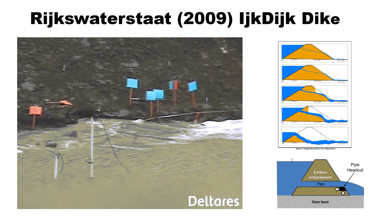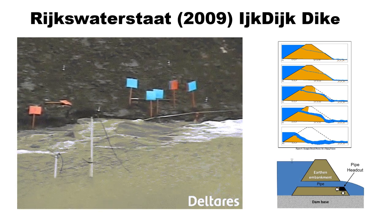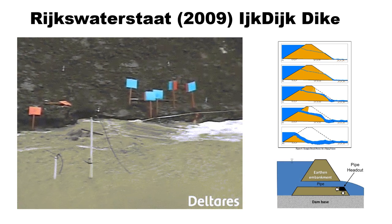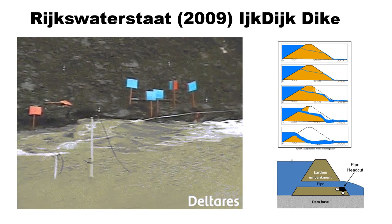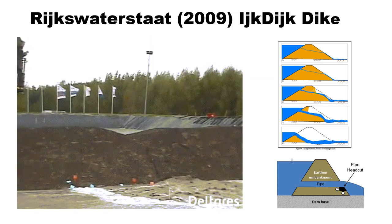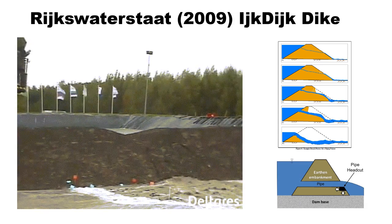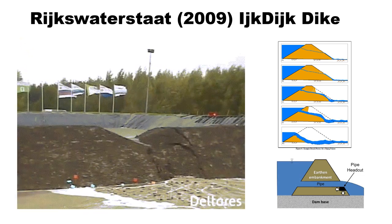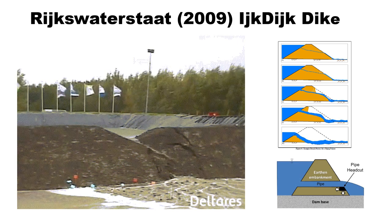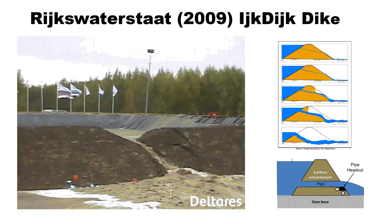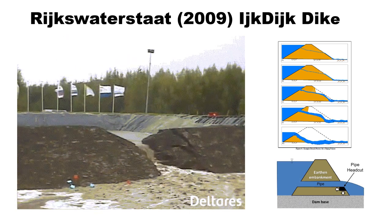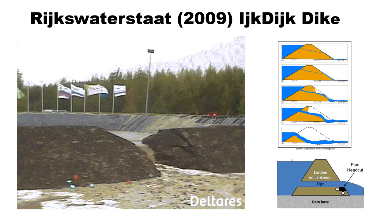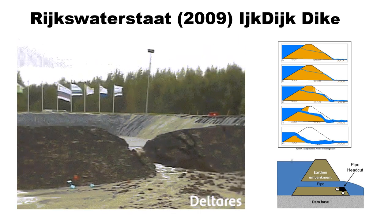A large-scale field test of a dike in the Netherlands shows small head cuts initially forming at the discharge end of the pipe, leading to bigger head cuts when the crest collapses and overtopping ensues. At the point shown, the crest is lowered with the embankment collapsing into the developing pipe. The freeboard is then exceeded on the deformed crest overlying the pipe and overtopping ensues. A couple of head cuts are observable as overtopping erosion continues, and multiple head cuts appear to merge into one larger head cut, resulting in the final breach width shown at the end of the video.